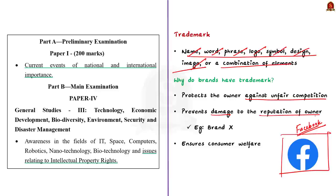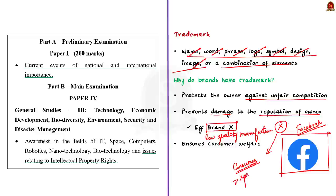Suppose you are buying a shoe from brand X, which is from a well-reputed company. Another counterfeit product manufacturer also puts the same logo of brand X on his low-quality product. As a customer, you will not be able to differentiate between the two. If you buy the low-quality shoe thinking it's from brand X and it does not last long, you will spread bad word about brand X, affecting their sales. If the original manufacturer can file a case against the fake product maker, it will keep away such manufacturers from imitating the brand. In a way, trademark also ensures consumer welfare — once a trademark is fixed to a product, there will be no confusion for consumers.